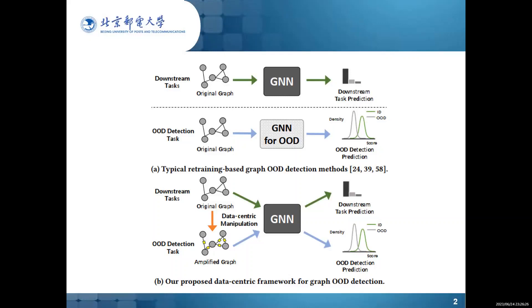As shown in the figure, traditional works propose to train a neural network specialized for the OOD detection task, which all employ model-centric methods. Differently, we propose a novel framework focusing on data-centric manipulation. After a proper modification of the graph input, the well-trained GNN can be reused to encode the manipulated graph into representations, then predefined scoring functions convert the representations into detection scores.